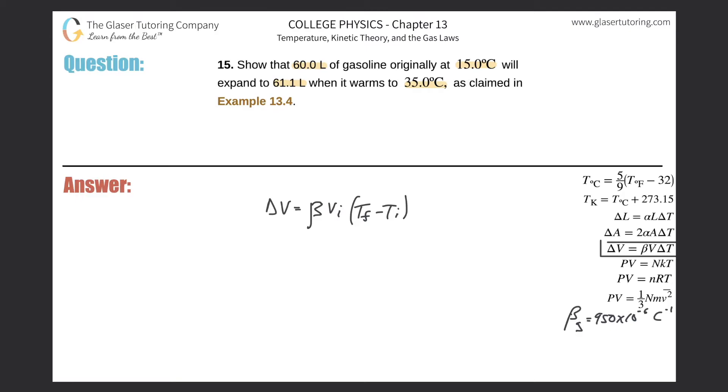Now what we need to do is show that 60 liters of gas will expand to 61 liters. So we can simply expand on the change in volume. Remember, since it's a change, it's going to be final minus initial. Here's my formula.